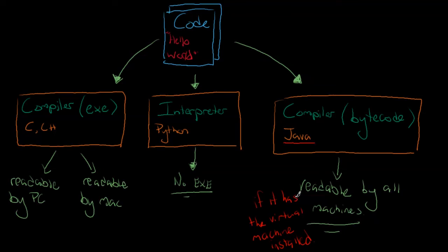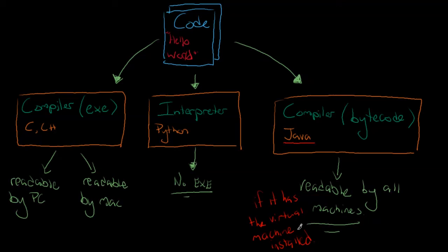When you try to run bytecode, the bytecode doesn't go through an interpreter or a compiler — it goes through the virtual machine and runs. The virtual machine is what works for each system. The virtual machine on the PC lets Windows understand what's going on; on a Mac, the virtual machine tells the Mac how to interpret the bytecode; and on a Linux machine, phone, or tablet, it does the same. The virtual machine is almost like a mini little computer sitting there waiting to run and interpret all these different things for these different machines.